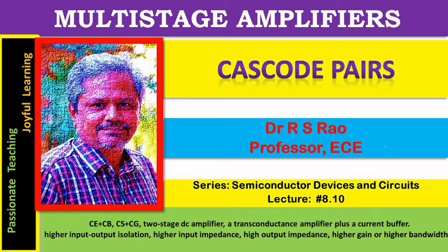In the case of FET version, the CG stage is connected at the output terminals of CS. When gains and impedances in the circuit are properly adjusted, it results in a cascode pair which is capable of giving higher frequency of operation and larger bandwidths, in addition to higher gains and higher impedances. With this small introduction to cascode pairs, we now move to begin the core session.